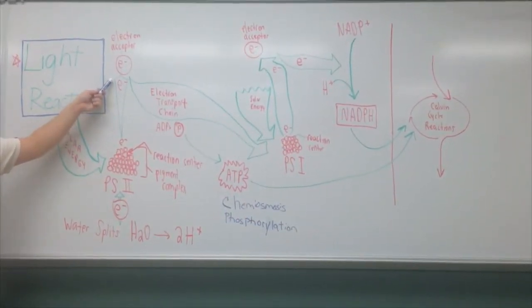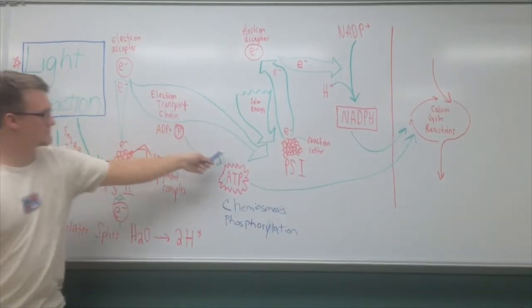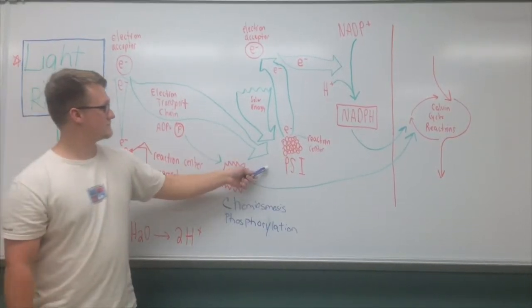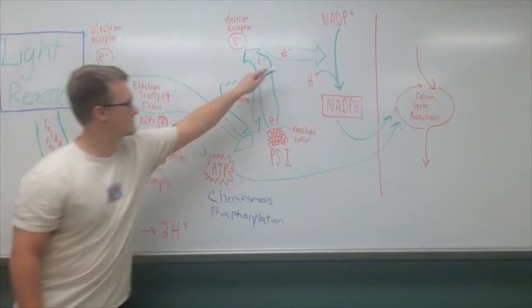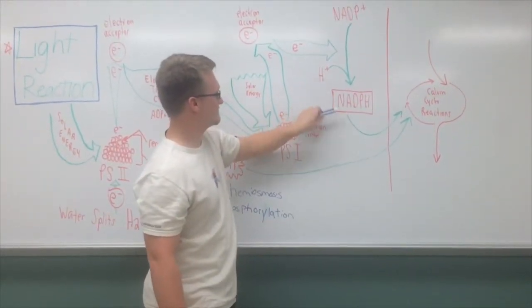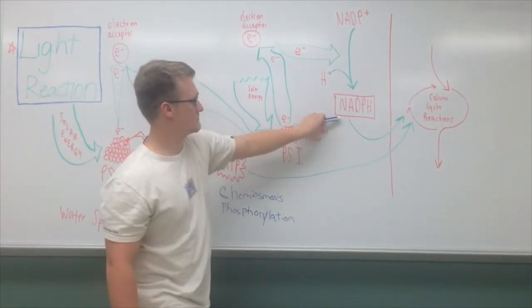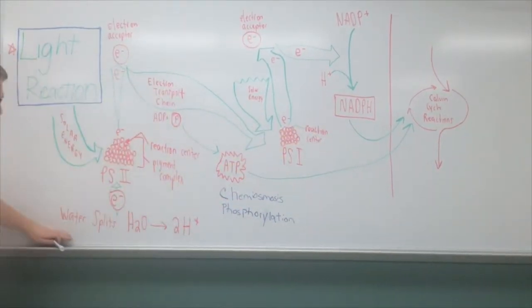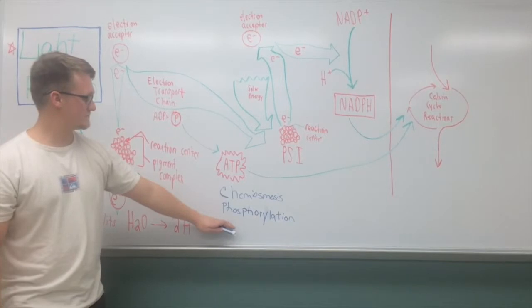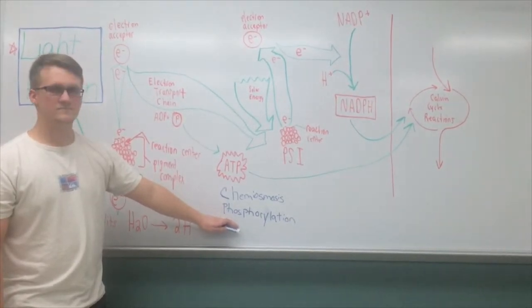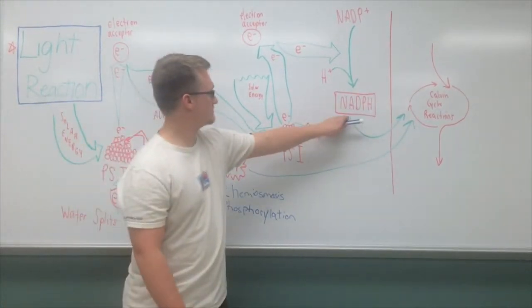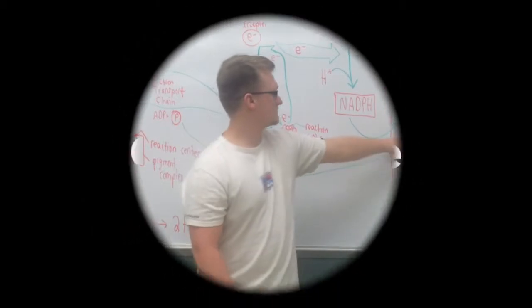Energized electrons leave PS2 and pass down an electron transport chain leading to the formation of ATP. Energized electrons replaced from PS2 leave PS1 and pass to NADP+, which then combines with H+ to become NADPH. The electrons from PS2 are replaced with electrons from water as it splits to release oxygen. The process of ATP synthase, which is an enzyme turning into ATP, is called chemiosmosis phosphorylation. The ATP and NADPH which was produced in the light reaction is fed into the Calvin cycle.